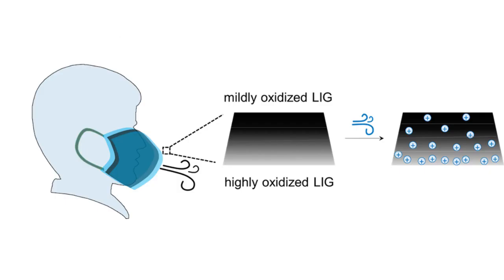To facilitate users to check whether graphene masks are still in good condition after being used for a period of time, the team fabricated a hygroelectric generator.